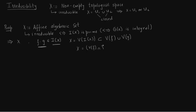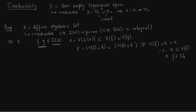Since X is irreducible, X can only be written like this. To make the inequality an equality we write it accordingly. Since X is irreducible, it has to equal either V(F) ∩ X or V(G) ∩ X. Without loss of generality, take it as V(F) ∩ X. That would mean X is contained in V(F), which means F belongs to I(X), and that is what we wanted to prove.